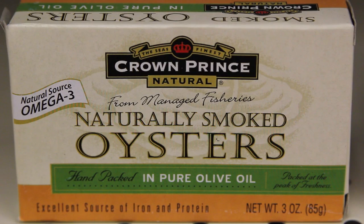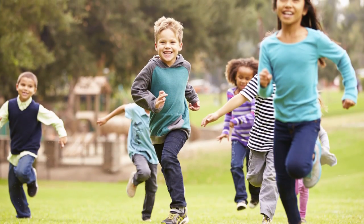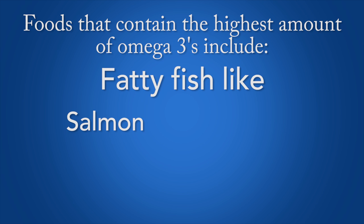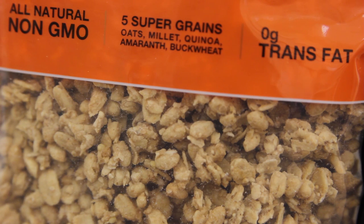Out of the healthy fatty acids, omega-3s usually get all of the buzz. Omega-3s are a type of polyunsaturated fat that research has shown to improve brain development in young children and delay the onset of cognitive decline in older adults. Foods that contain the highest amount of omega-3s include fatty fish like salmon, tuna, mackerel, and lake trout. Walnuts, soybeans, and canola oil will also have some omega-3s.